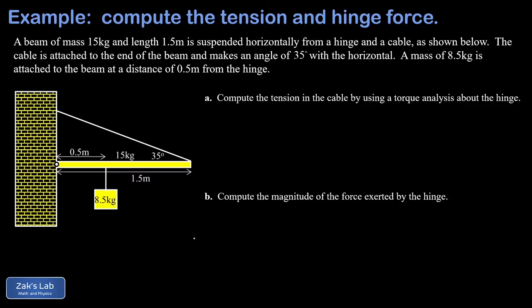A good place to start is to get all the qualitative force vectors and vector components into the diagram. We'll start with the weight vectors, including the weight of the hanging mass and the weight of the beam itself. The weight of the hanging mass is mg: 8.5 kilograms times 9.8 meters per second squared, giving us a weight of 83.3 newtons.